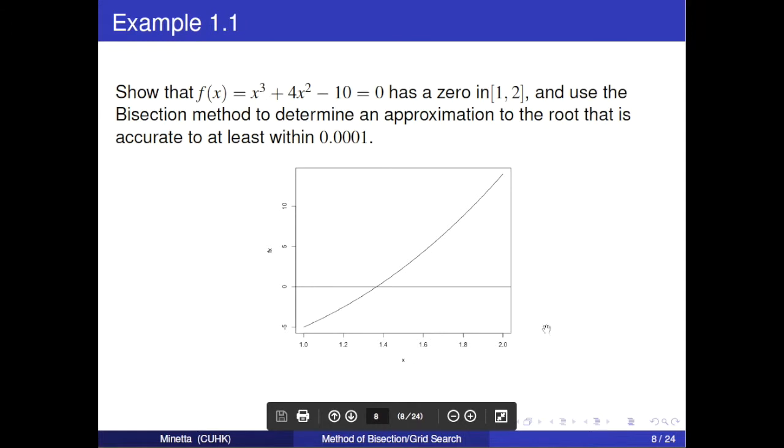Here is an example. Show that the function f has 0 in this interval and use the bisection method to determine an approximation to this root, that is, accurate to at least within this range. Before solving the question, we plot f(x) using R. We can see around x equals 1.4, f(x) equals 0.